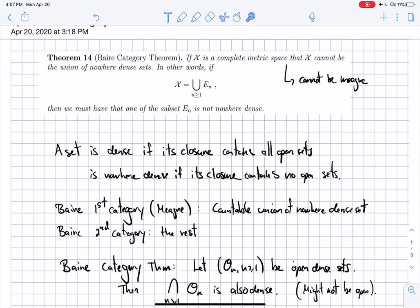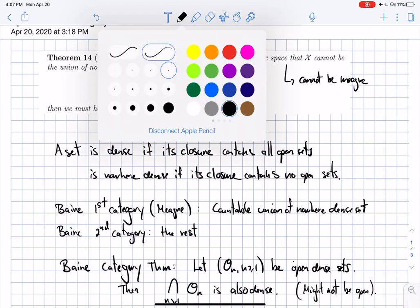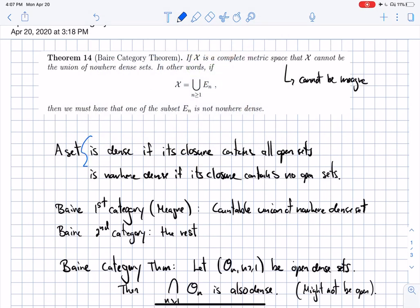Let's be clear here. Recall what dense means. Think of Q in the rationals: dense means that if you take any open set, then the intersection with that set must be non-empty. Another way to say that is that if I look at the closure of that set, then it contains all open sets.